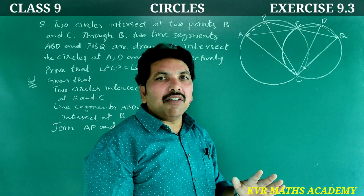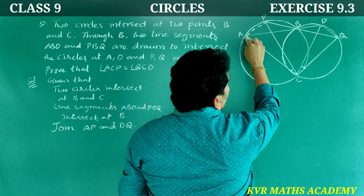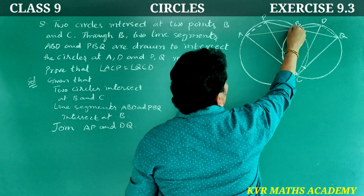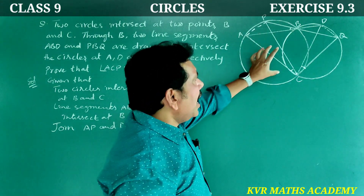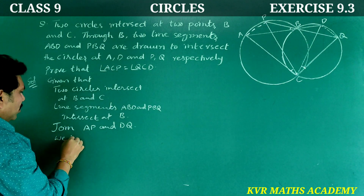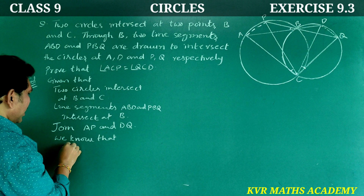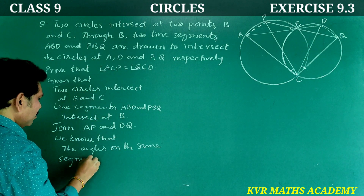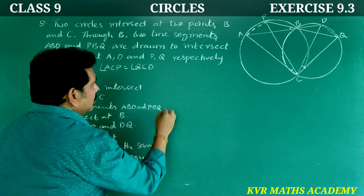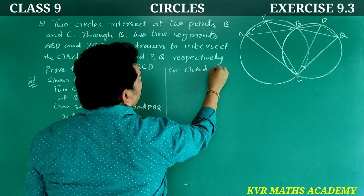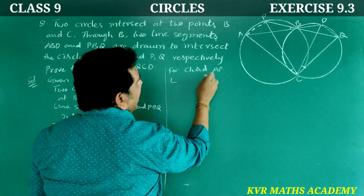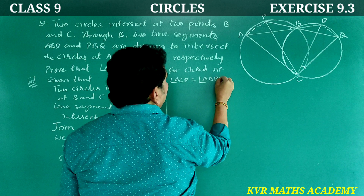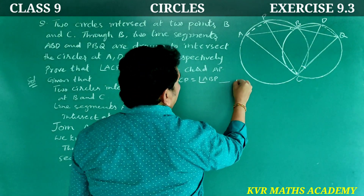The angles in the same segment are equal. For chord AP, angle ACP is equal to angle ABP — these two angles lie on the same segment. This is equation number 1.